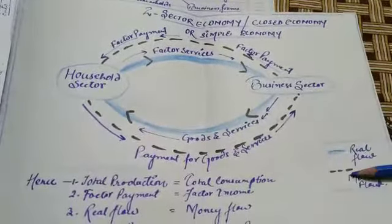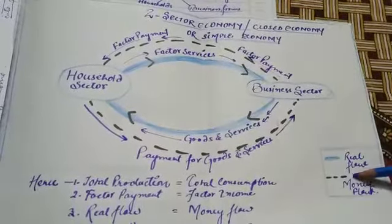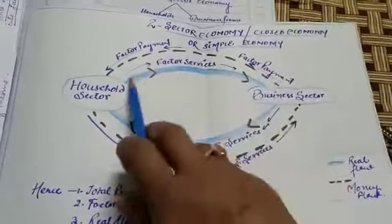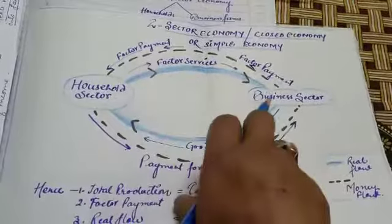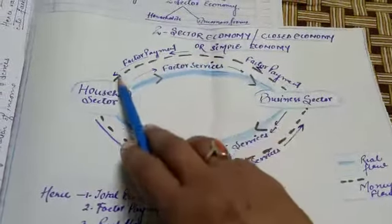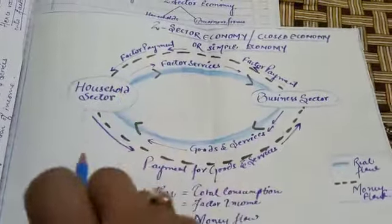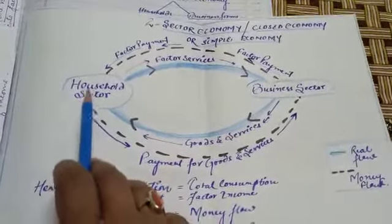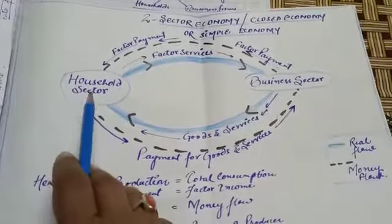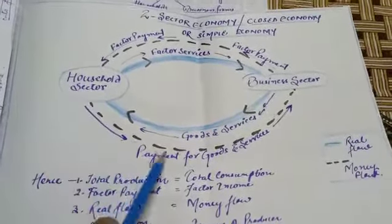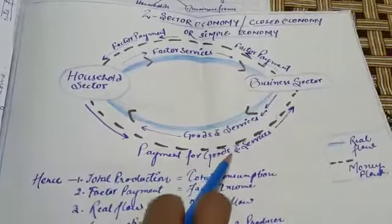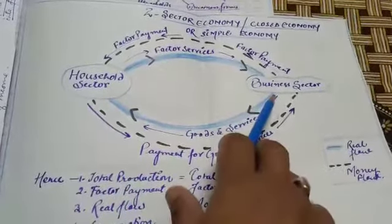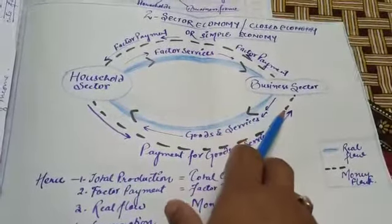The second is money flow. Money flow shows that for their factor services, business sector provides factor payment to the household sector, and out of that factor income which the household earns, it spends that income for buying goods and services — meaning it provides consumption expenditure to the business sector.